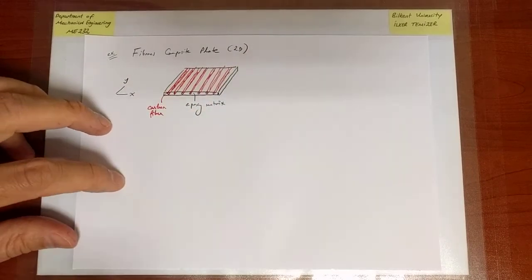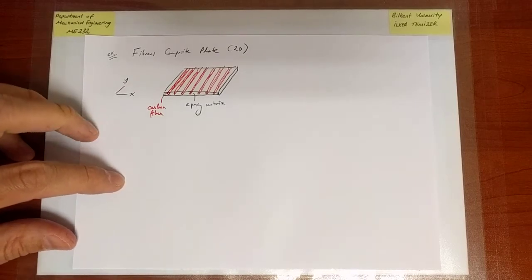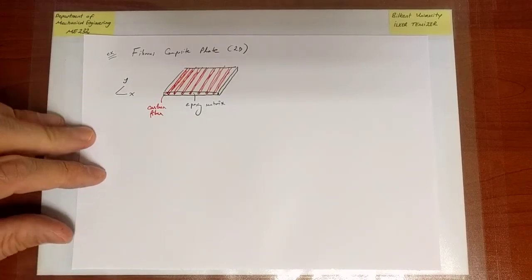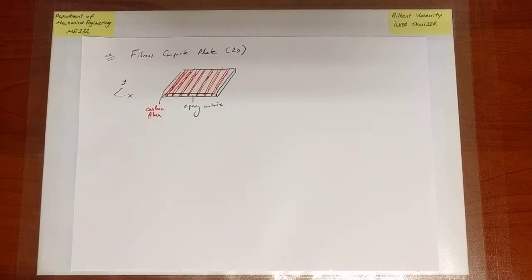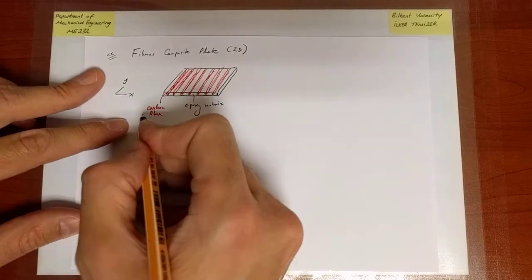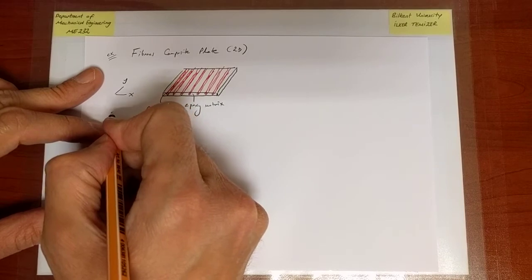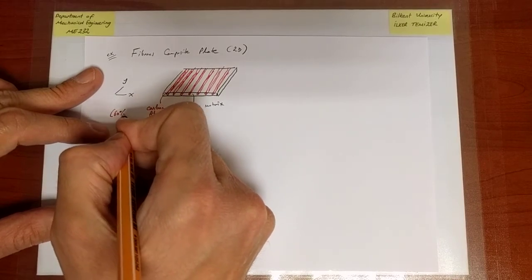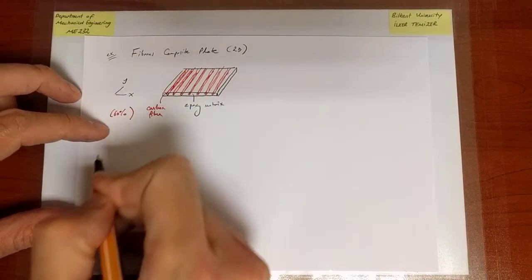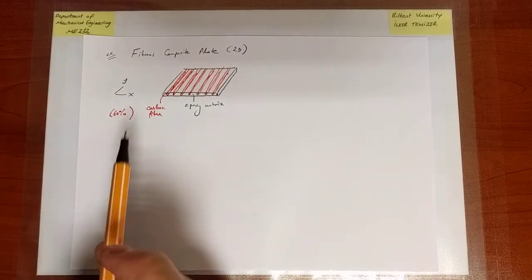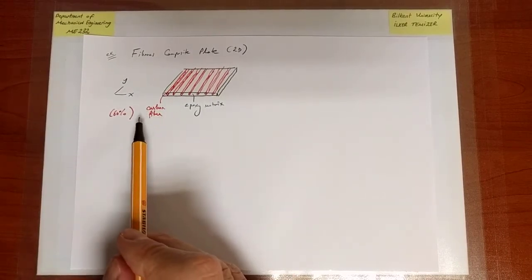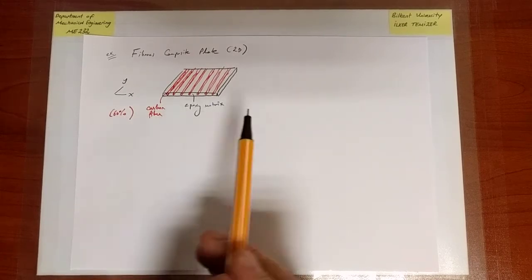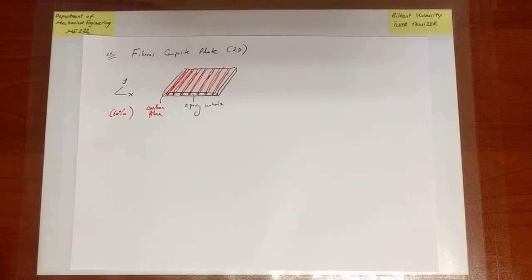We already have talked very briefly about the fact that the amount of fiber you put in is important, and here it is noted in this problem that you put 60% volume fraction of carbon fibers. Once this information is given to you, in your book there is a table of material properties from which you can extract all the relevant material constants.